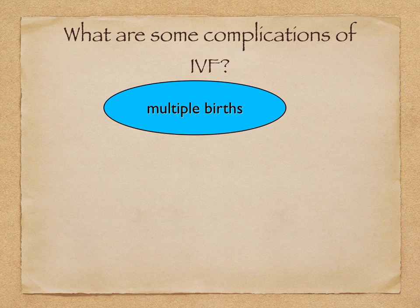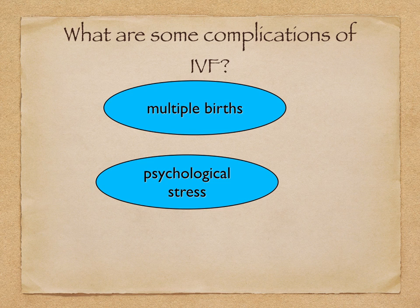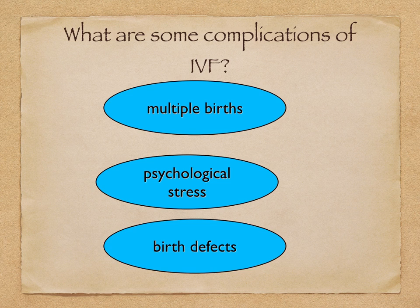Some complications of IVF include multiple births, because several embryos are being transferred. Multiple births are linked to miscarriages, premature births, and death of the newborn. Psychological stress is also related to infertility, and the IVF procedure and financial implications play a huge role in psychological stress. Birth defects may occur, although this risk is not well supported by studies.